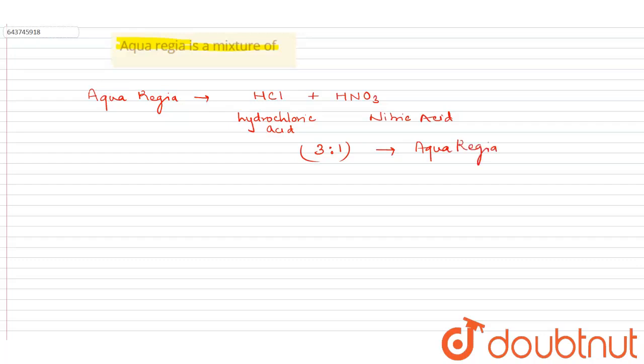What is the purpose of aqua regia? It dissolves noble metals like platinum, silver, and gold because they are less reactive and this is a very strong acid.